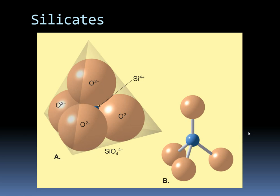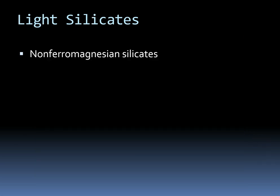When we talk about Bowen's reaction series, I'm going to show you lots of different structures that come with these silicon and oxygen tetrahedrons. But for now, we're just going to keep it simple. We can break silicates into two broad categories — we have the light silicates, also known as non-ferromagnesian silicates.